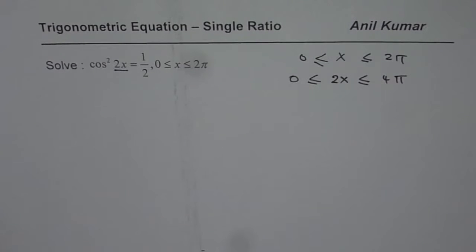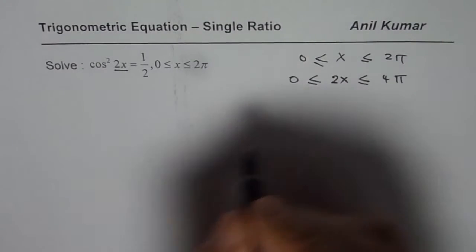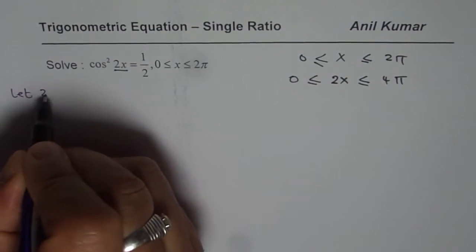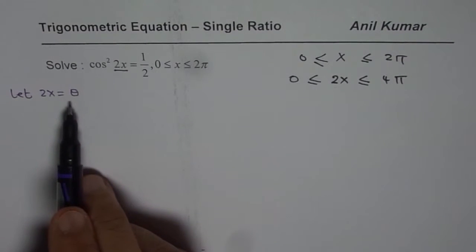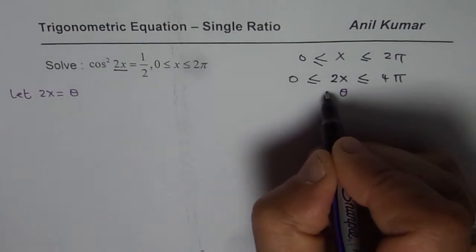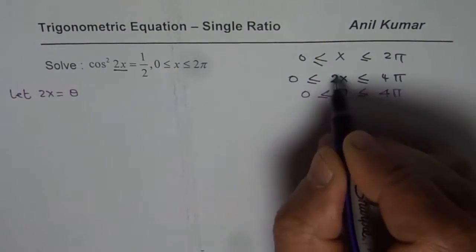Let me rewrite the question to make it better for you. Let 2x = θ. If 2x is θ, then θ is between 0 to 4π. Do you get the idea?